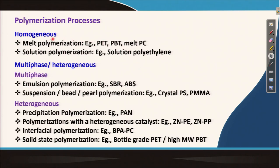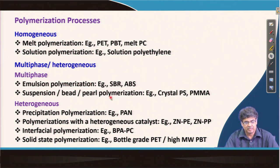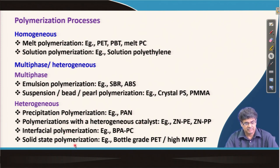In homogeneous systems, we can have melt polymerization or solution polymerization. In multiphase, we can have emulsion polymerization or suspension, bead, or pearl polymerization. In heterogeneous systems, we can have precipitation polymerization, polymerization with heterogeneous catalysis, interfacial polymerization, and solid state polymerization.